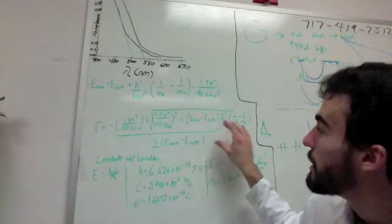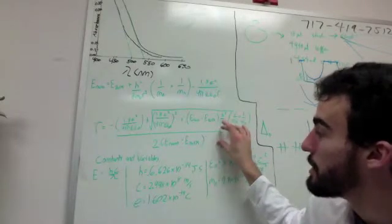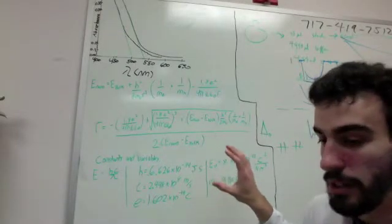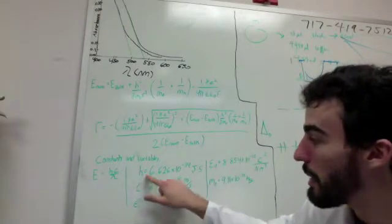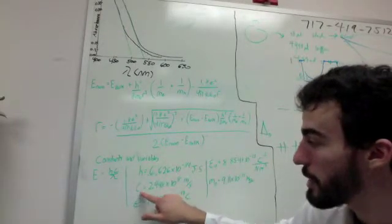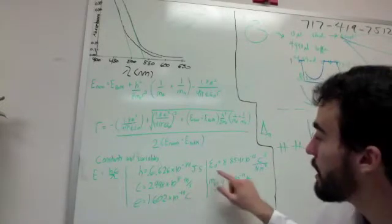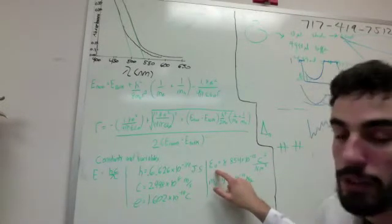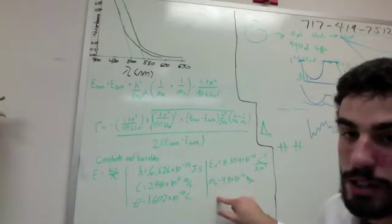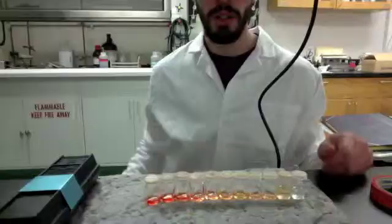Many of the variables and constants are listed here: Planck's constant, speed of light, charge of an electron, permittivity of free space, and mass of the electron.